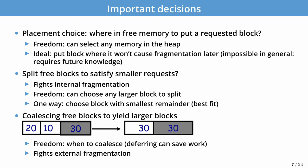One splitting strategy is best fit — choosing the block with the smallest remainder after splitting. The third decision is when to coalesce free blocks to generate larger blocks. If two adjacent blocks are both free, we can coalesce them into a single larger block, giving us more freedom for future allocation decisions. For example, a block of 20 and a block of 10 that are both free can be coalesced into a block of 30. Sometimes coalescing is done immediately and sometimes deferred to a later operation only when needed, trading off performance between the malloc and free paths.